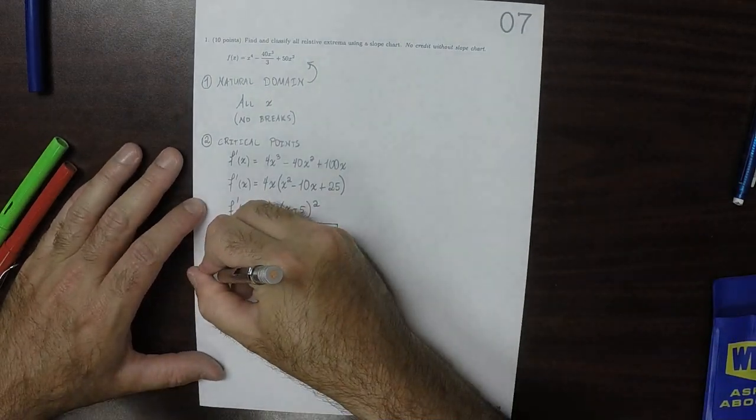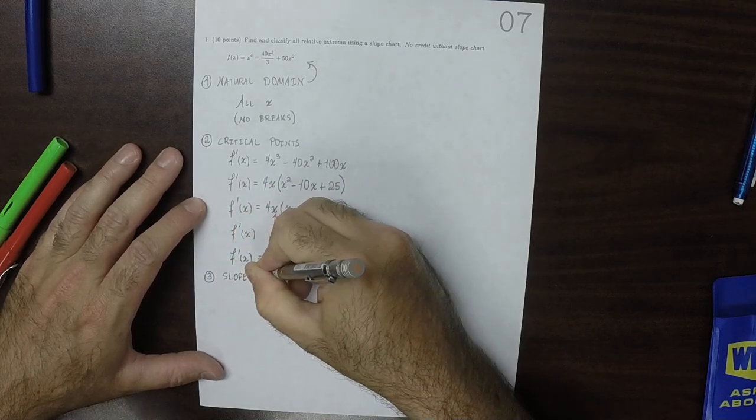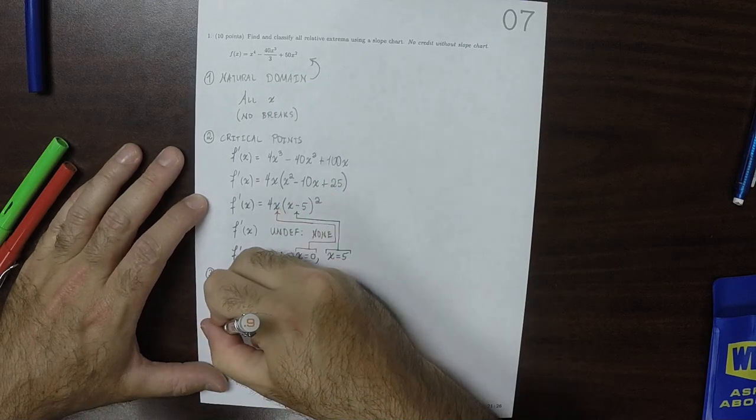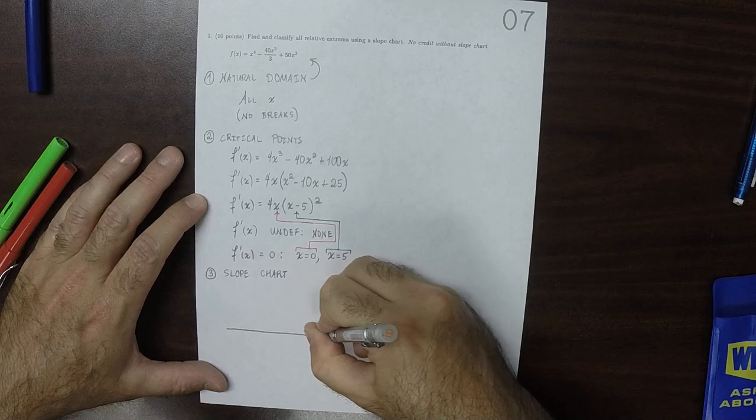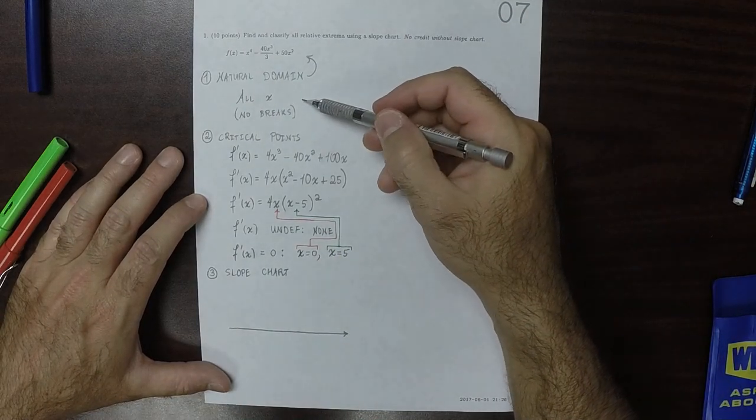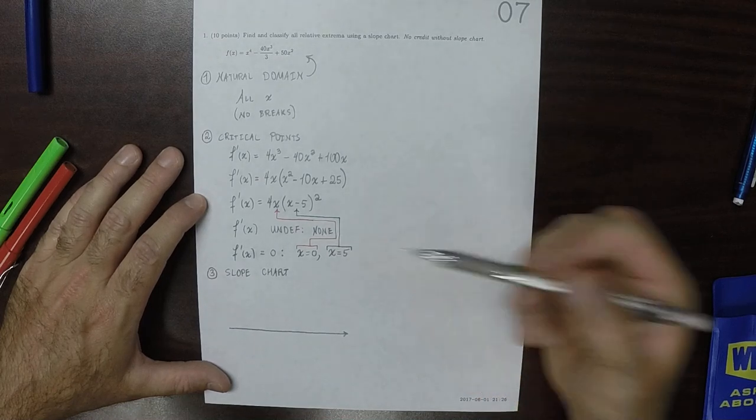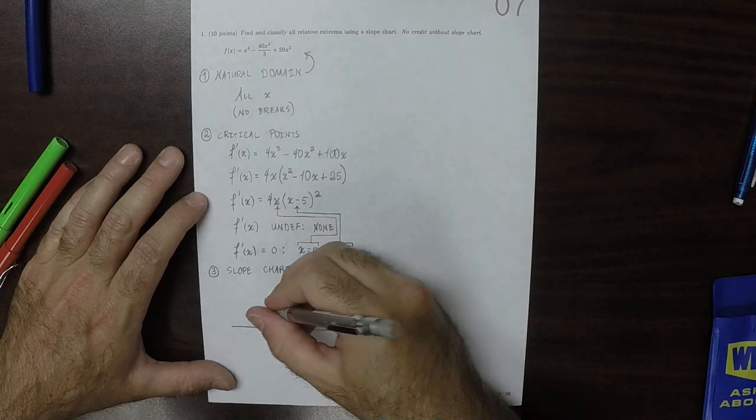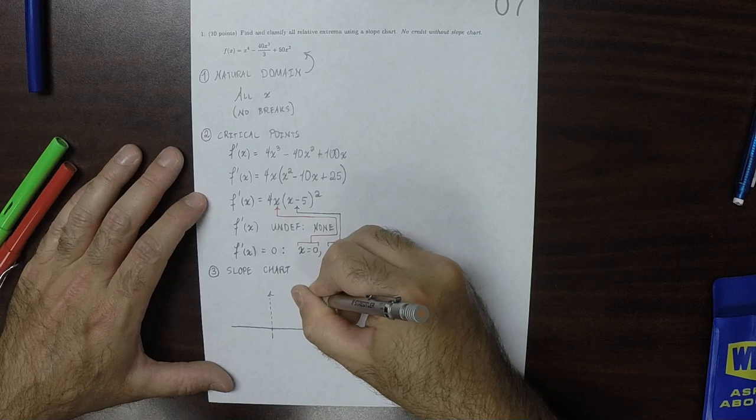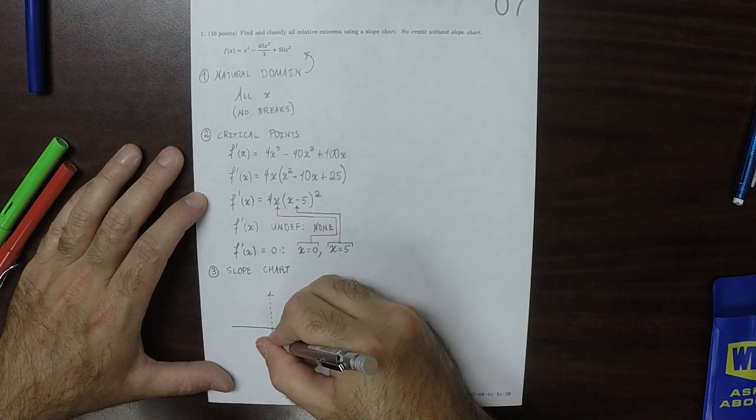Three. Now we make the slope chart. Specifically, we'll plot the entire natural domain. And we're going to plot all the breaks—there are none. All the places where the derivative is undefined—there are none. And all of the places where the derivative is zero—there were two.